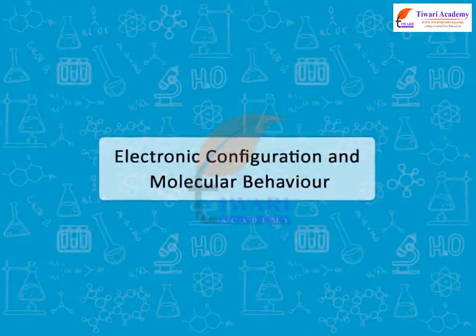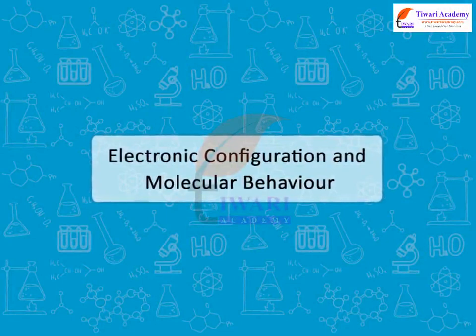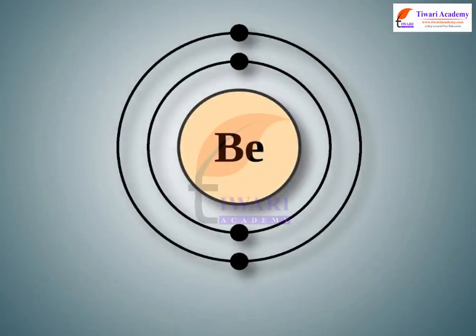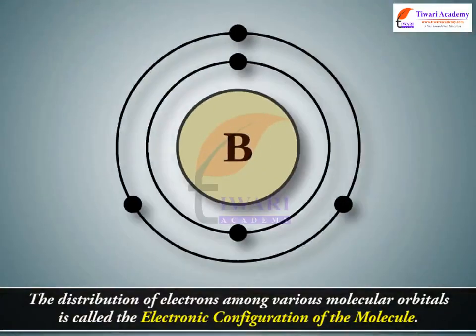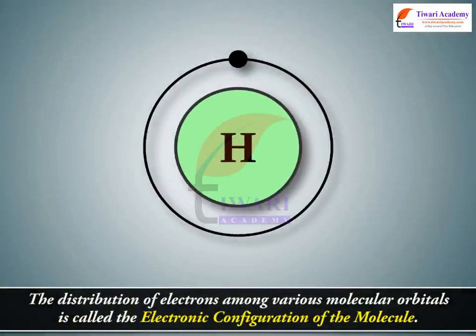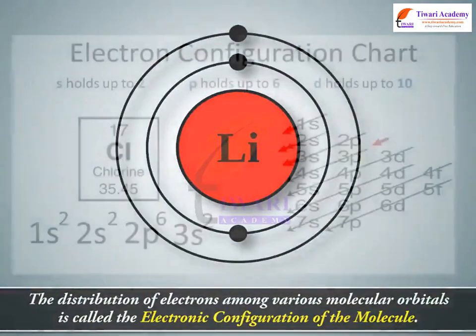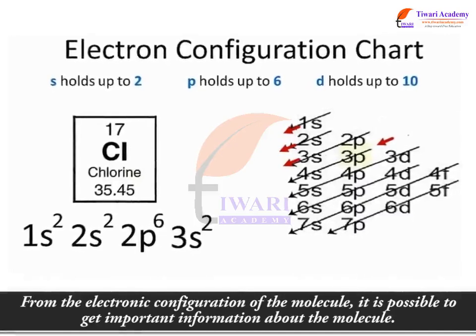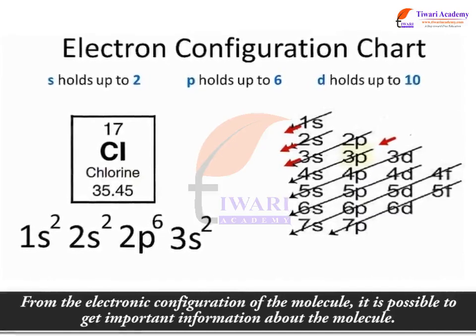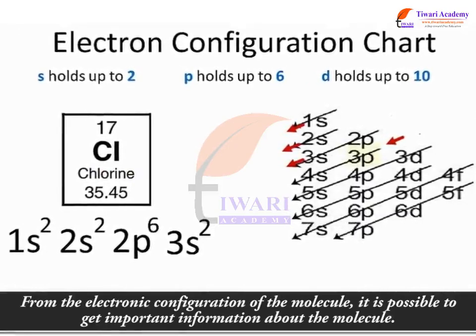Electronic Configuration and Molecular Behavior. The distribution of electrons among various molecular orbitals is called the electronic configuration of the molecule. From the electronic configuration of the molecule, it is possible to get important information about the molecule.